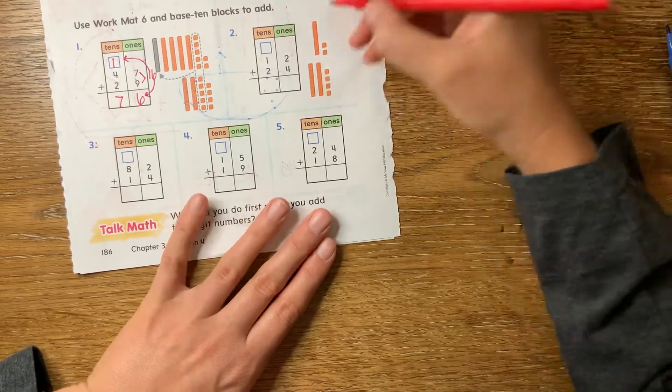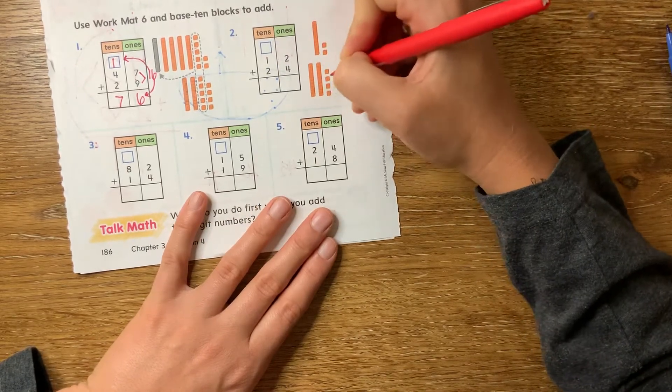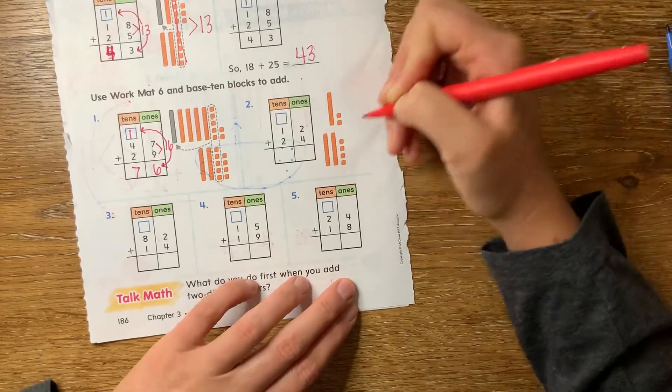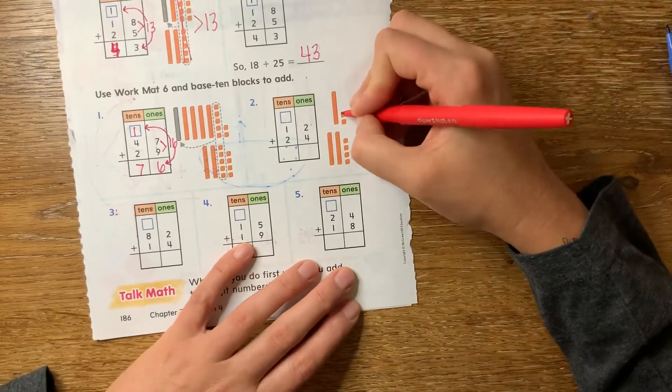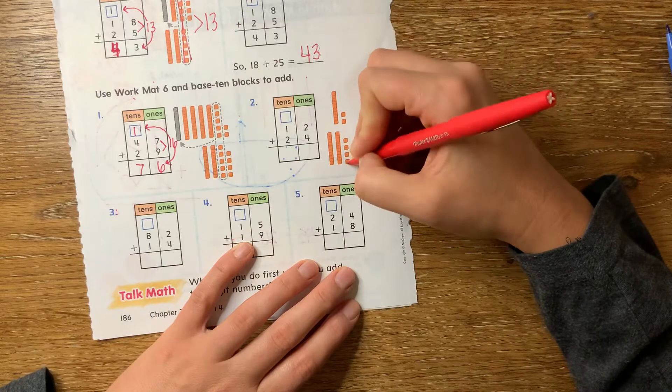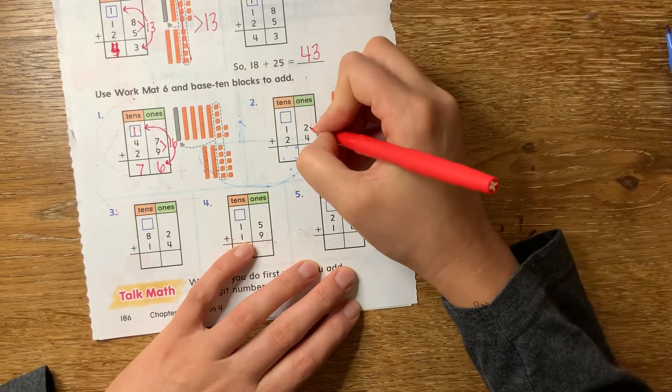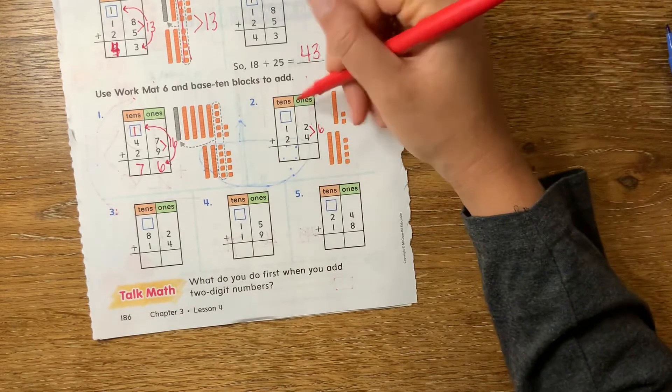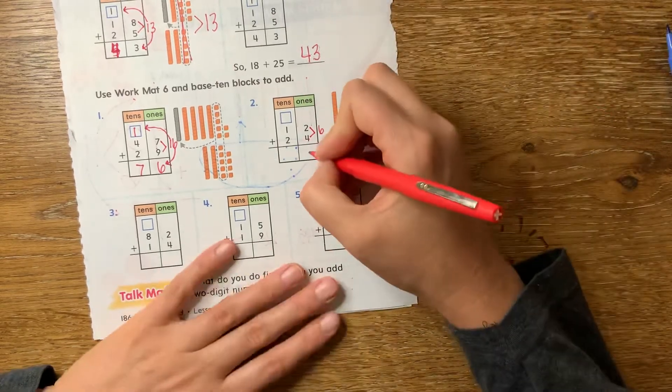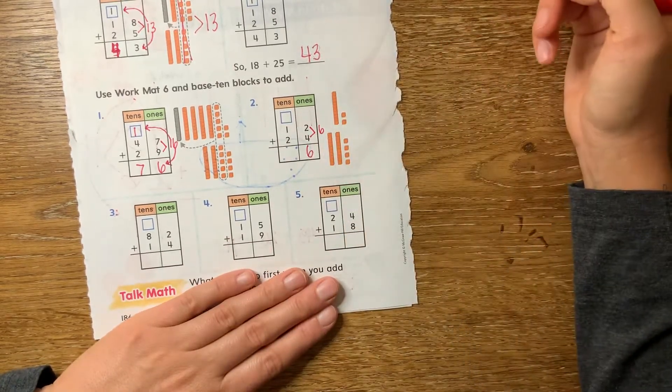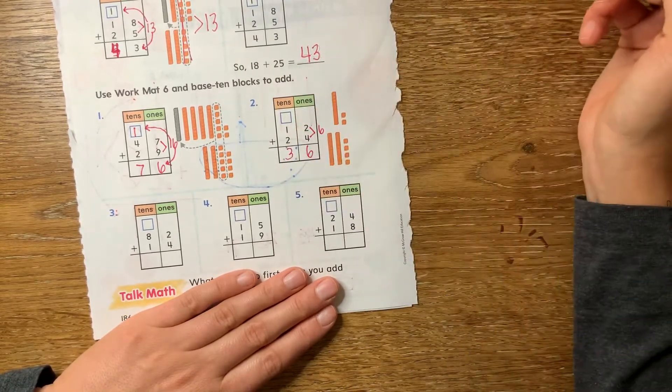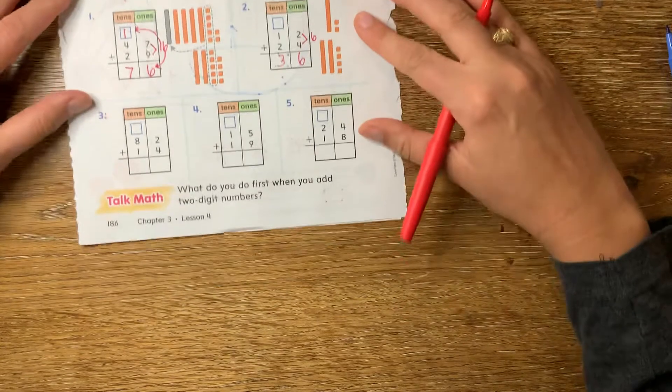Let's come over here. So I have 12 plus 24. One 10 and two ones plus two 10s and four ones. Make sure you can see that. Okay, so if I add my ones together, can I make a 10? No, because two plus four is only six, so there's nothing to regroup, right? I don't have to take 10 ones out and make it a 10 because I can just put six down here in the ones place. Then I add my one 10 and my two 10s, and I get three 10s, and I'm done.